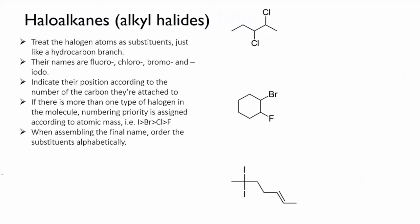Haloalkanes are so called because they have a halogen atom attached to them. The halogens, remember, are the group 7 elements: fluorine, chlorine, bromine and iodine. When they're attached as a substituent to a hydrocarbon they are named as fluoro, chloro, bromo and iodo.